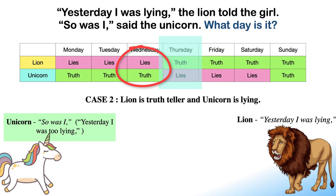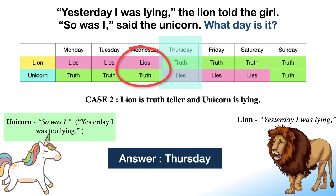Both statements behave as per the given data. To simplify: on Thursday, the lion tells truth whereas the unicorn lies. On Wednesday, the lion was lying, which makes the lion's statement 'Yesterday I was lying' true for Thursday. The unicorn tells truth on Wednesday, which makes the unicorn's statement false for Thursday. Since the unicorn lies on Thursdays and is lying here, it is behaving as per the given data. Thus the answer to this puzzle is Thursday.